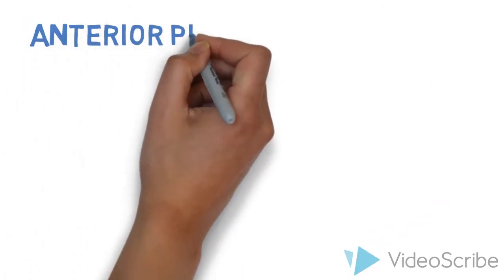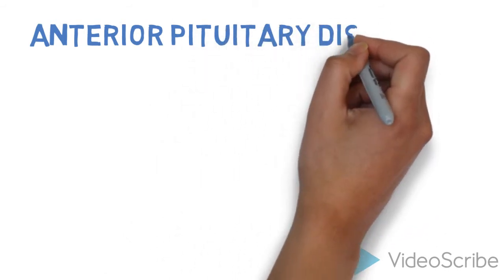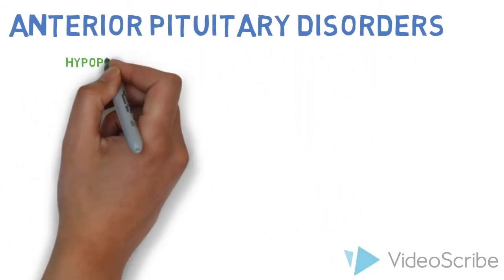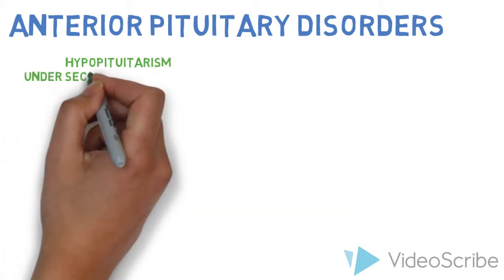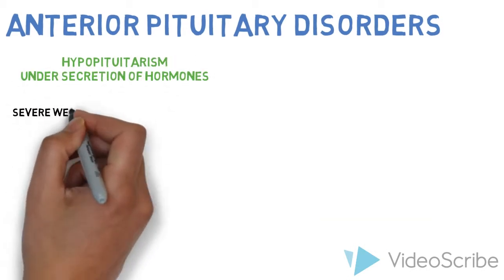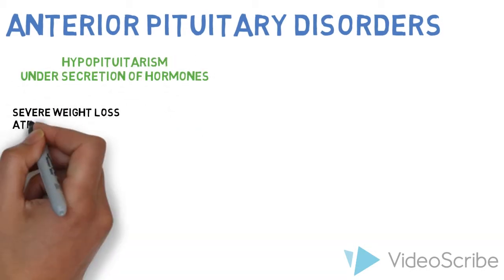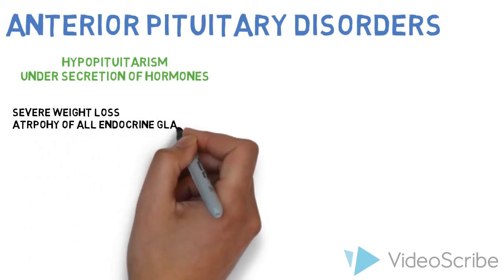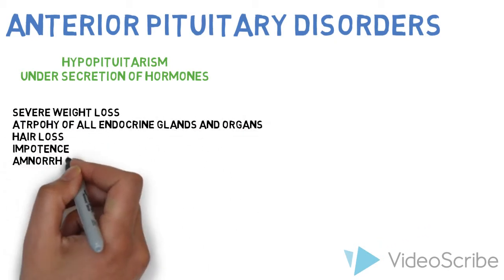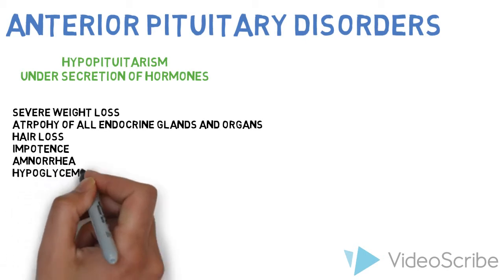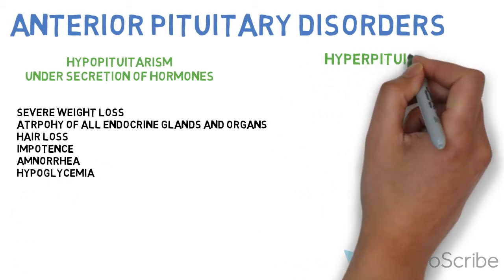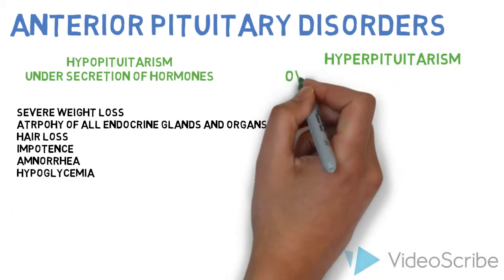As far as anterior pituitary disorders go, we have hypopituitarism, which is basically the undersecretion of hormones. Here we're going to see severe weight loss, atrophy of all endocrine glands and organs, hair loss, impotence, and amenorrhea. Hypoglycemia will also be seen.